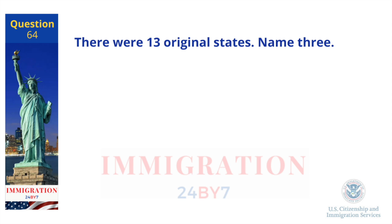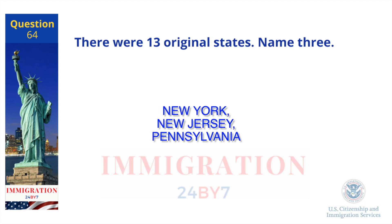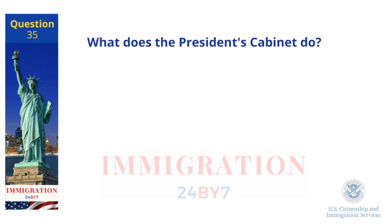There were 13 original states. Name three. New York, New Jersey, Pennsylvania. What does the President's Cabinet do? Advises the President.